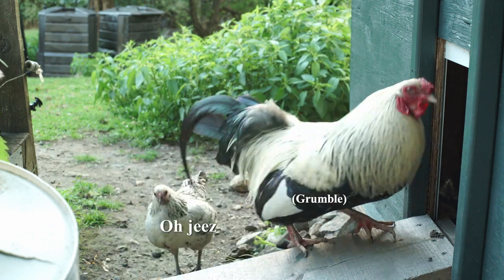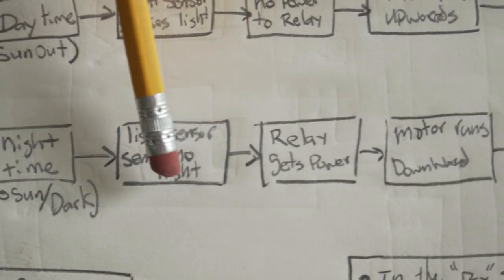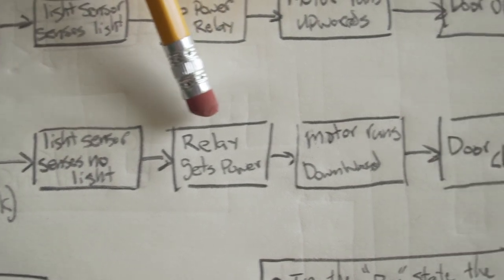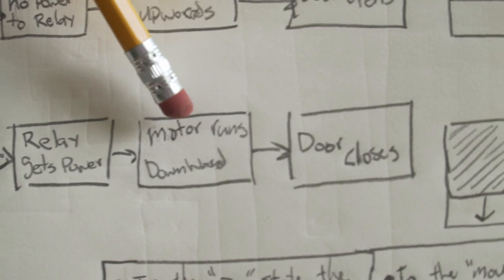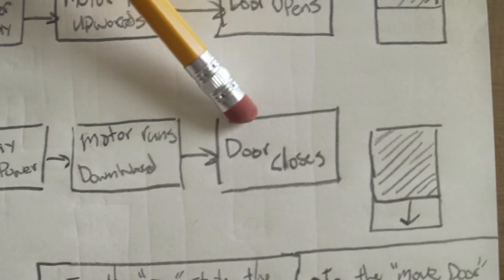At night, it will be dark, and the light sensor will sense that there is no light. This will cause the dual-pull, dual-throw relay to have power, and make the motor turn in the downward direction, closing the door.